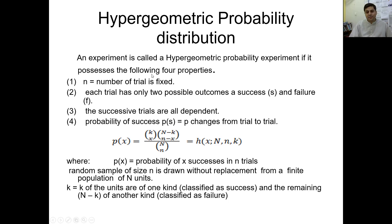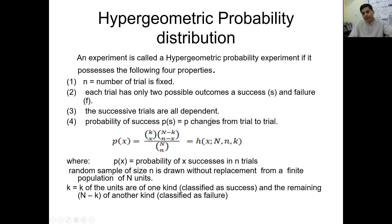Similar to binomial distribution, hypergeometric probability distribution also has four properties. The number of trials will be fixed, and each trial has only two possible outcomes: success and failure. These two properties are similar to binomial. But the other two properties are different: in binomial, trials are independent, but in hypergeometric, trials are dependent. In binomial, the probability of success will not change; in hypergeometric, it will change from trial to trial. Due to these two different properties, you need to identify the hypergeometric probability distribution.